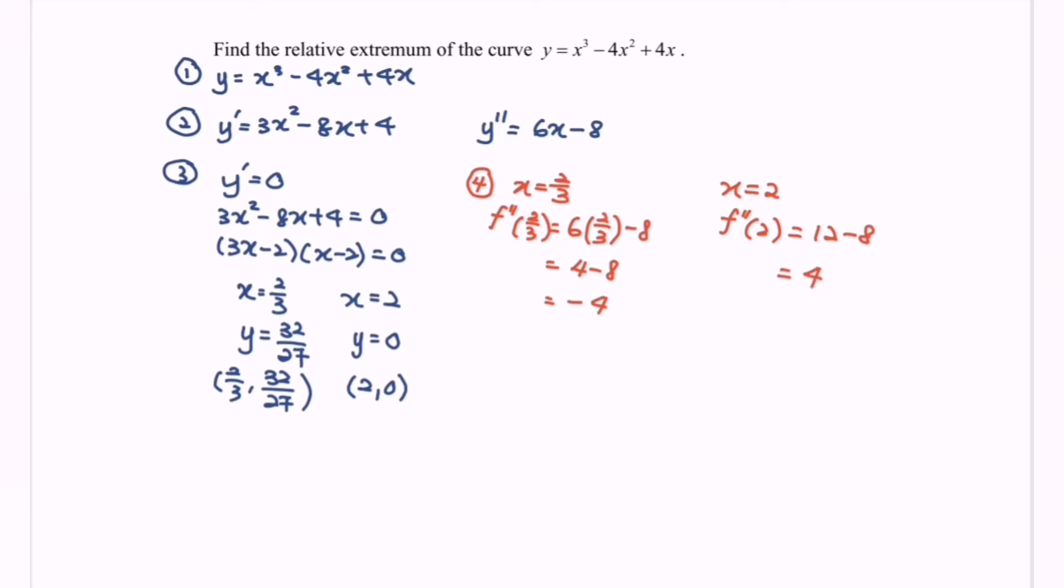So kindly observe the situation where we have negative 4 which is less than 0. So this shows that this is a maximum value. Next, if the situation is equals to 4 where we have greater than 0, so it is a minimum value.